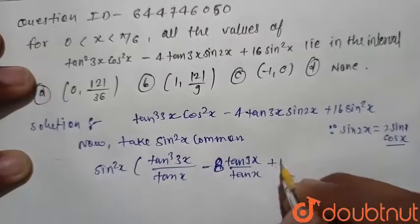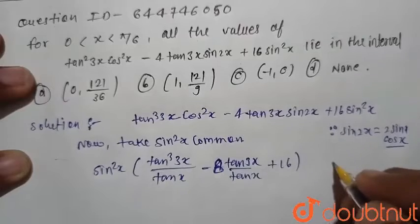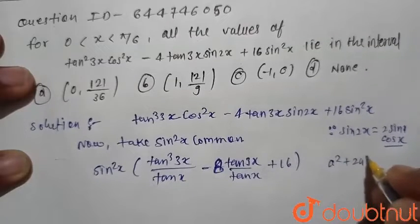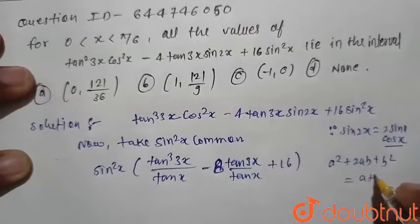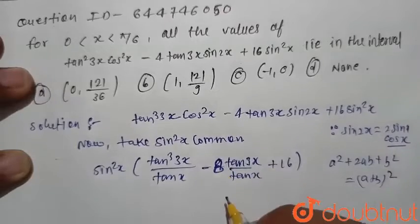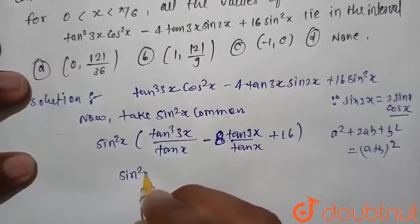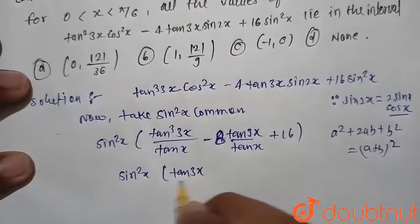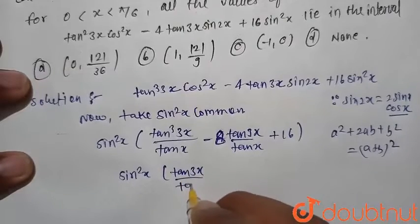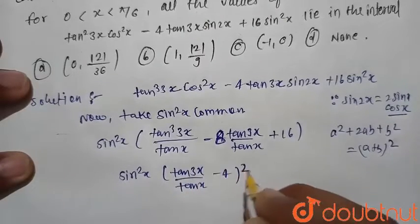We recognize that this is of the form a² + 2ab + b², which equals (a + b)². So we can rewrite the expression as sin²x multiplied by [tan(3x)/tan(x) minus 4] raised to the power 2.